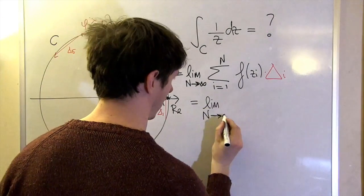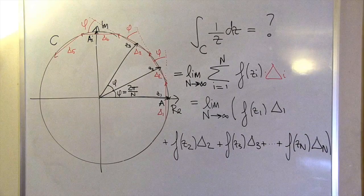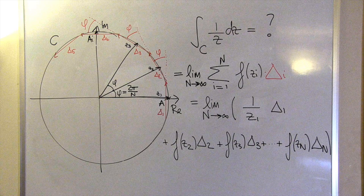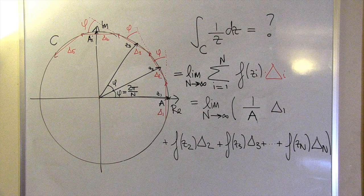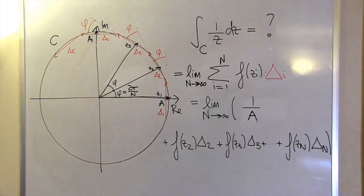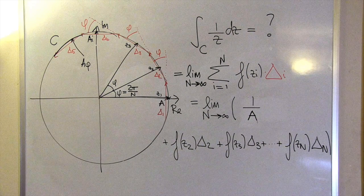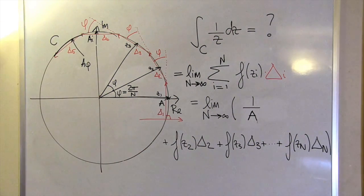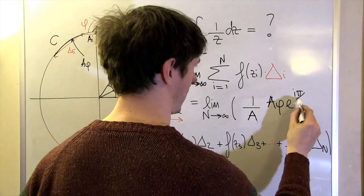The first term is f of z1 times delta 1. That's 1 over z1 times delta 1. And z1 is just the point at the intersection between the circle and the real number line that we've seen before. 1 over z1 is just 1 over a. Delta 1 is a little more tricky—it's a vector whose length is roughly equal to the arc of the circle that lies next to it, which is a times phi, and it's at an angle of pi over 2 radians to the real axis. And so delta 1 is equal to a times phi multiplied by e to the i pi over 2.